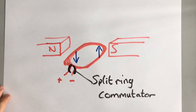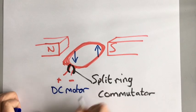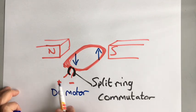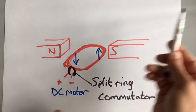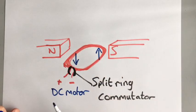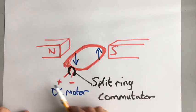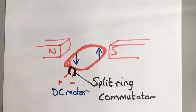With an AC motor you don't need a split ring commutator, because an AC motor runs on alternating current and the current is already changing backwards and forwards — positive, negative, positive, negative. So you just need a slip ring like in the last video. A DC motor needs a split ring commutator; an AC motor doesn't, because the current is already reversing and that's the job the split ring commutator would otherwise do.